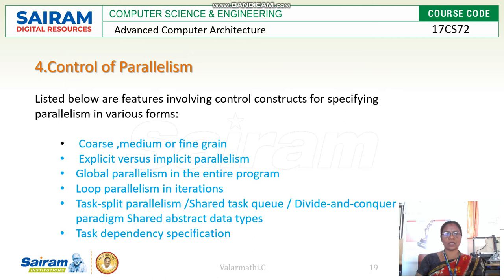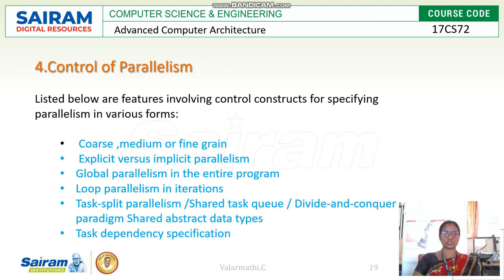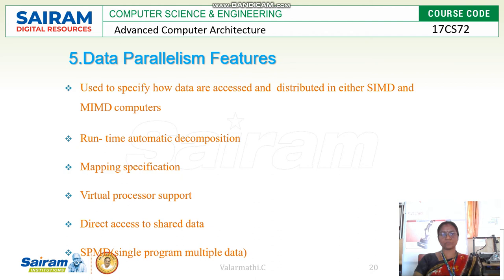The fourth feature is control of parallelism. This covers granularity — whether it is coarse, medium, or fine — and also explicit versus implicit parallelism. It includes global parallelism across the entire program, loop parallelism in iteration-wise execution, and task dependency specification at the task level.